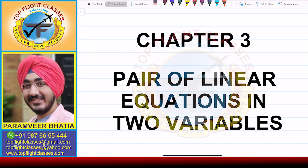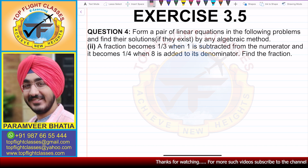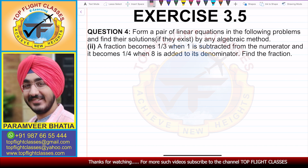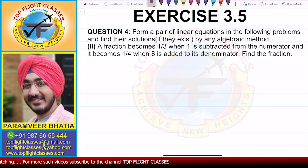Welcome to Top Flight Classes. In this video we will cover the second part of question number four of Exercise 3.5. Question number four says: form a pair of linear equations in the following problems and find their solutions if they exist by any algebraic method. The second part says: a fraction becomes one-third when one is subtracted from the numerator, and it becomes one-fourth when eight is added to the denominator.